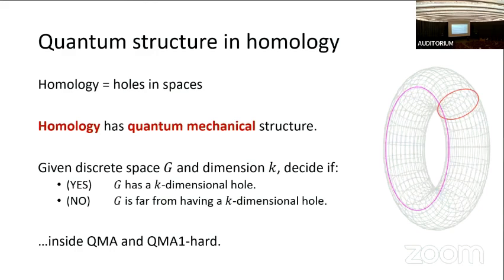When we see this sort of quantum mechanical structure in classical problems, it's interesting because you can then look for it as an application of quantum computers, which can exploit the structure. In particular, the formal statement we'll make is: given a description of a discrete topological space and a dimension k, decide if it has a k-dimensional hole or if it does not.